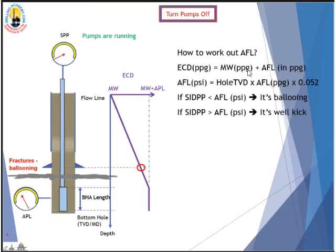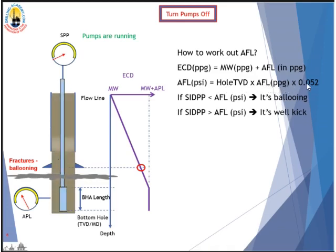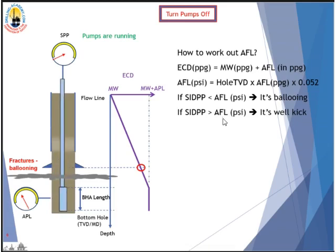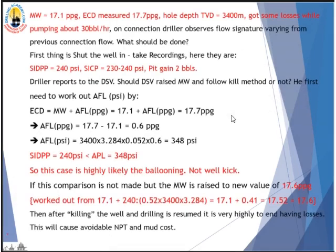How do we work out AFL or APL? ECD equals mud weight plus AFL or APL in PPG. To get AFL in PSI: take the whole TVD in feet, times the AFL in PPG, times 0.052. Now here is the key rule: if the shut-in drill pipe pressure in PSI is less than AFL in PSI, it is highly likely ballooning. But if the shut-in drill pipe pressure is higher than AFL, it is definitely a kick.